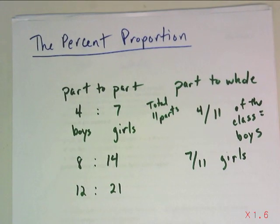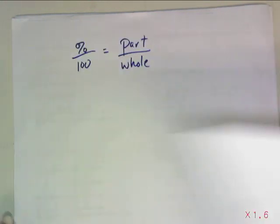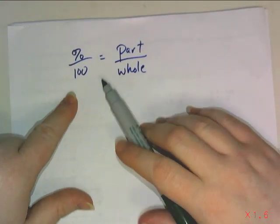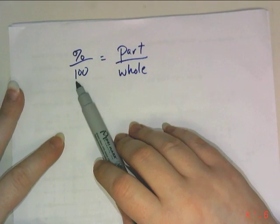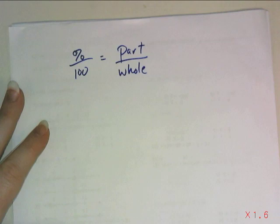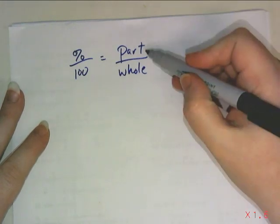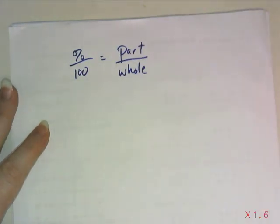So, keeping that in mind, let's now talk about what the actual percent proportion is. It looks like this. Percent out of 100 is equal to part out of whole. Now, the 100 will always be there, because that's what percent means. It means out of 100. And the part and the whole depend on whatever situation you're dealing with.